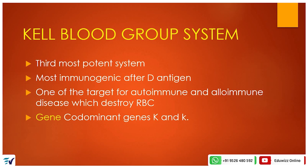The Kell blood group system was first discovered in 1946. The gene is located on chromosome number 7. The main codominant genes are K (uppercase K) and k (lowercase k).